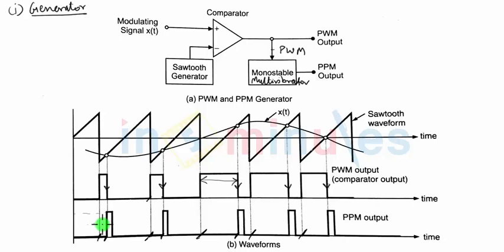The advantage of PPM is that its amplitude is constant, so the effect of noise is very less, but that is also the case in PWM.